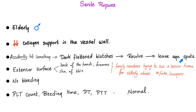These age spots appear on the extensor surface, such as the back of the hands, the back of the forearm or extensor surface of the forearm, and the shin of the tibia. Is the shin of the tibia considered extensor surface? Yes, because of how the upper and lower extremities rotate differently — the upper limbs are different from the lower limbs.